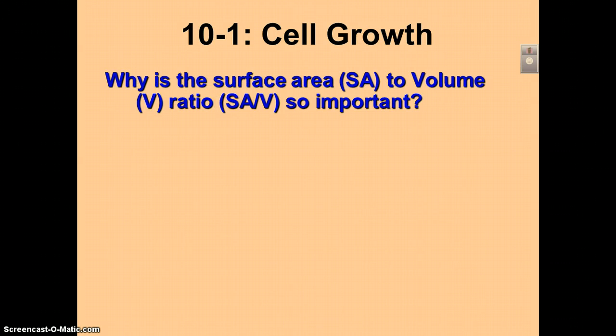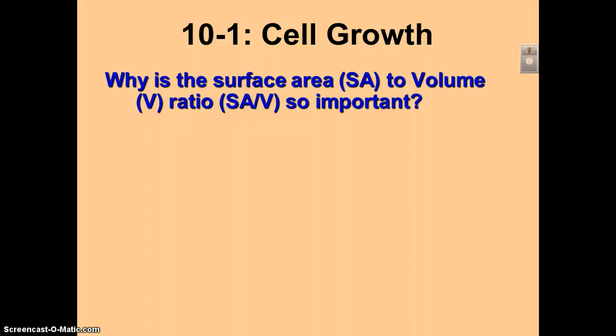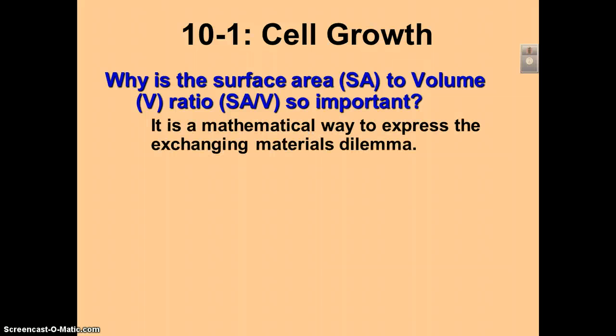There is a mathematical way to describe this, and it's called the surface area to volume ratio. A cell requires a really, really large surface area compared to its volume. You want the surface area to be six, seven, eight, or nine times bigger than the volume.